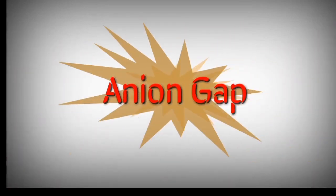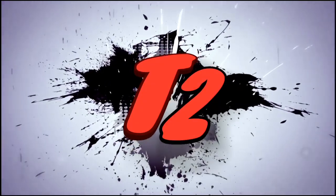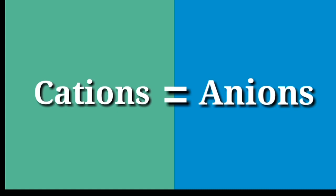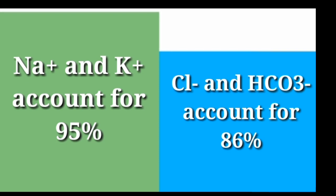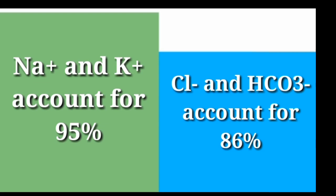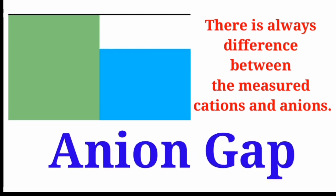In this video I will give you a brief idea about anion gap. In extracellular fluid, some cations and some anions are always equal to maintain electrical neutrality. Commonly measured cations include sodium and potassium, accounting for 95%, and commonly measured anions include chloride and bicarbonate, accounting for 86%. There is always a difference between the measured cations and anions — this is called the anion gap.